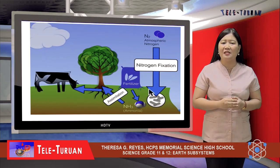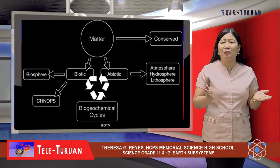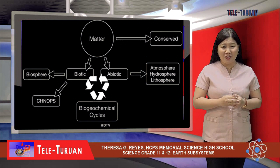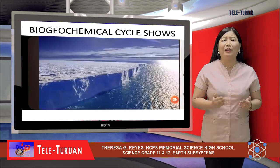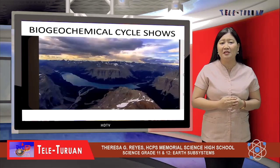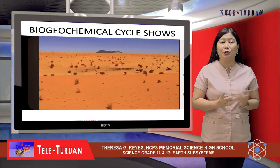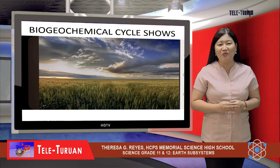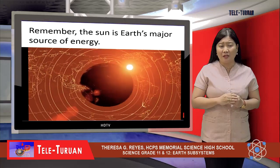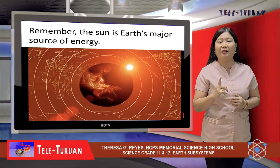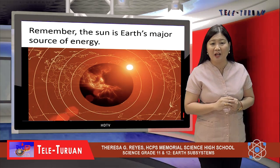Human activities through industrial fixation keep the balance of the nitrogen cycle in one way or another. This movement of substances through the biosphere is collectively known as the biogeochemical cycle. The biogeochemical cycle shows the movement of substances from their non-living reservoir through the various food chains in the ecosystem, and then return through oxygen, carbon dioxide, and water cycles. Remember, the sun is Earth's major source of energy. When light energy reaches the Earth, three things happen: light is reflected back into space, light is transmitted through an object, and light energy is absorbed and captured in photosynthesis.